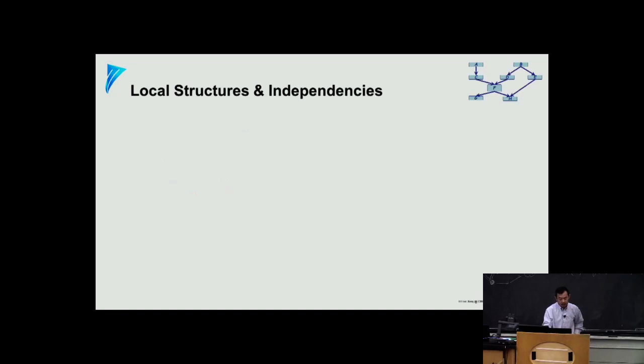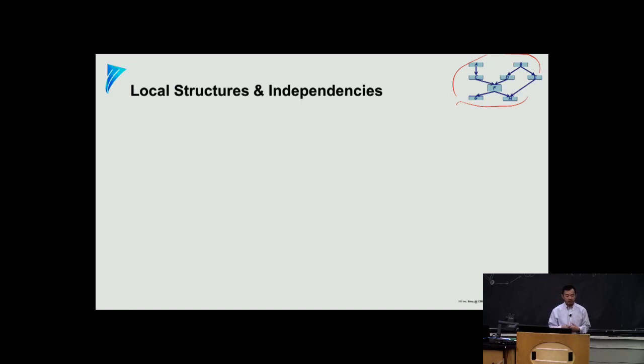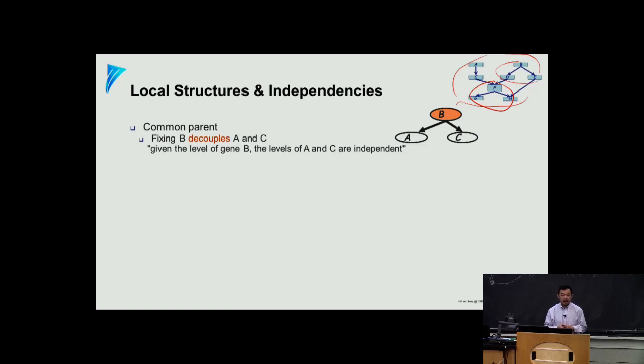Now go back to the more formal side. We have a graphical model — what do all these edges mean, other than guiding you into a factorizable definition of the joint distribution? They actually have a probabilistic definition of meaning, which is known as independencies. Let's look at the three major building blocks of basic structures. This first structure — a common parent pointing to a number of children — you saw it in the HMM. It leads to a probabilistic property: A is independent of C given B.